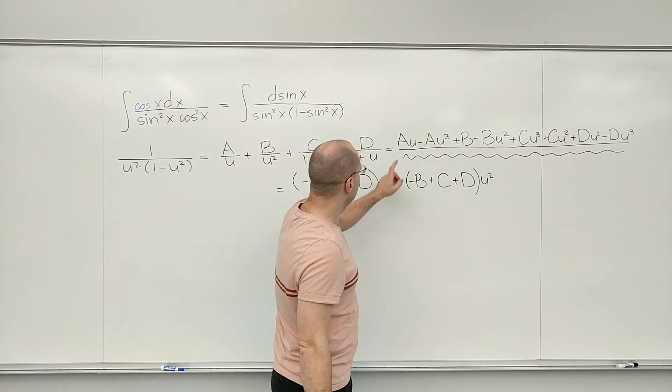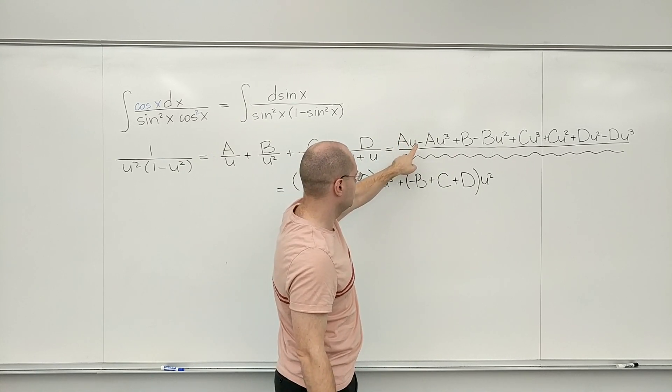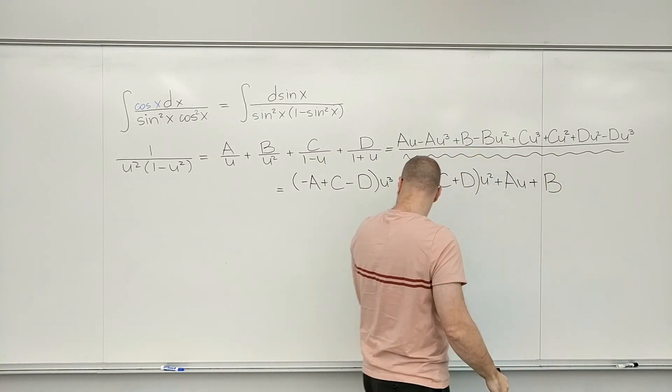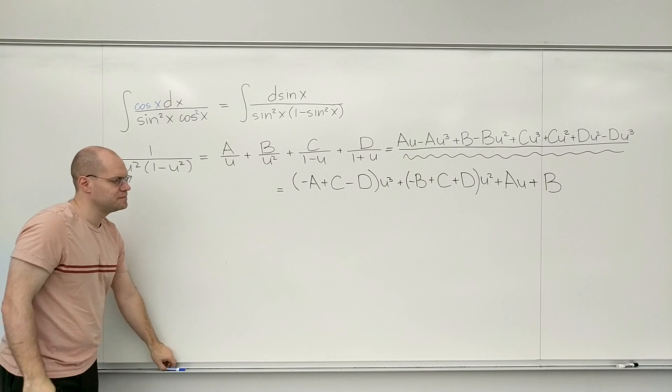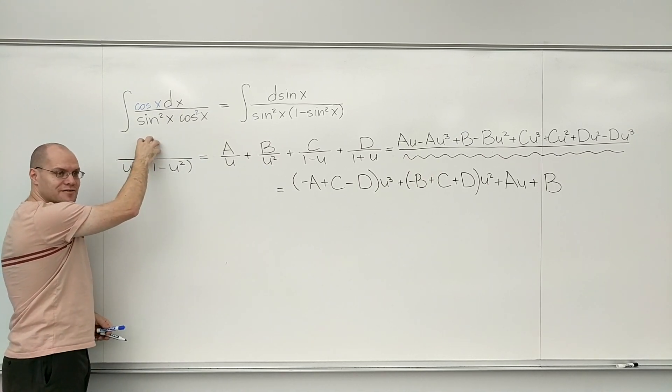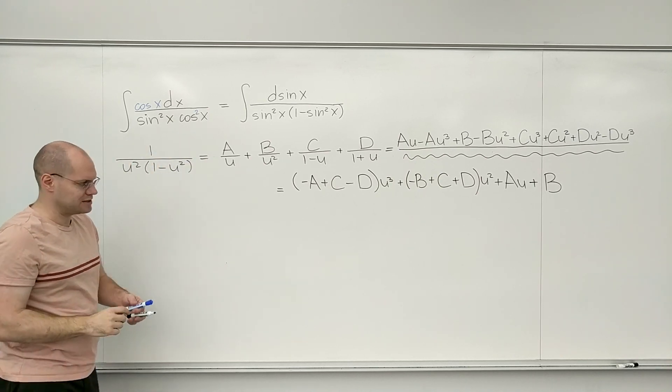For U, we have AU. That's it. And I think this will actually be simple. So let's see. We have to match it up with just one. So U cubed is missing, U squared is missing, U is missing. Just the free coefficient is present. So that means that B equals 1.